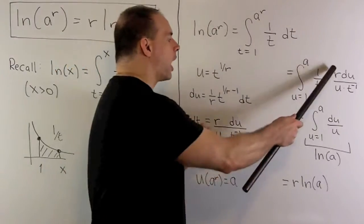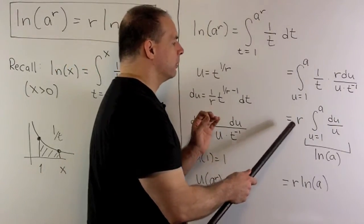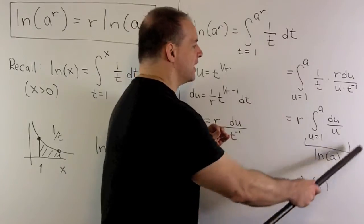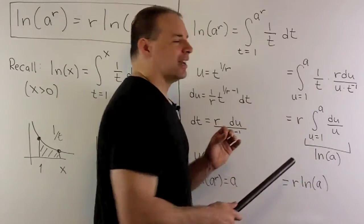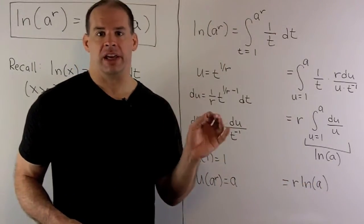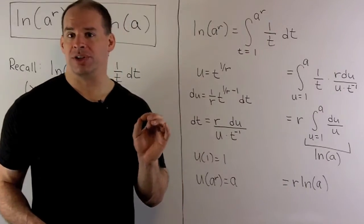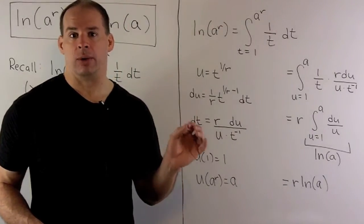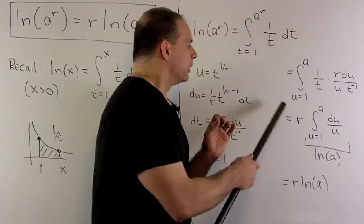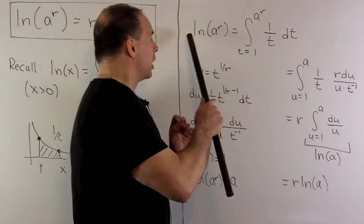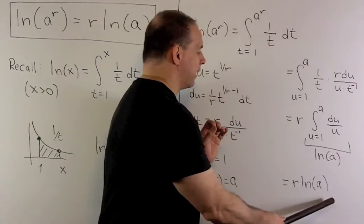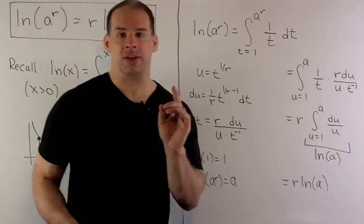I pull the r out, and then I'm just left with r times — and you'll note this is just the definition of natural log of a, except we have a u where there's a t. That's not a problem because u is a dummy variable anyway. So the end result is natural log of a to the r is equal to r natural log of a, and that's what we want.